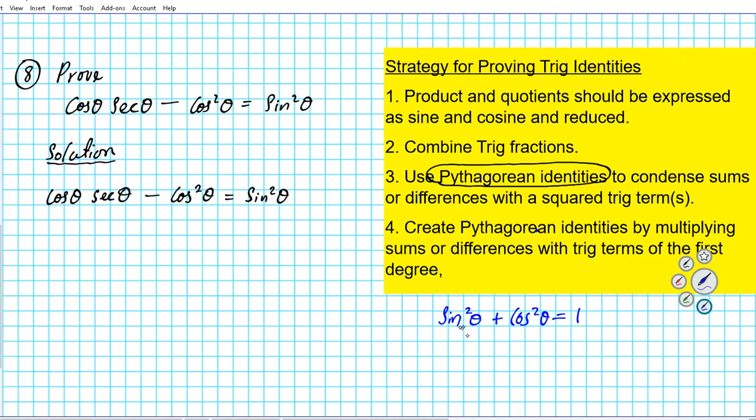As we did in problem number seven, we wrote down two other forms of this particular Pythagorean identity. This is form number one. In order to get the second form, all we just have to do is subtract sine squared theta from both sides of the equation. If we subtract sine squared theta from both sides, we'll end up with cosine squared theta is equal to one minus sine squared theta. This is the second form of the Pythagorean identity involving cosine squared theta.